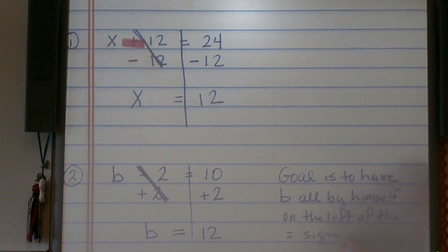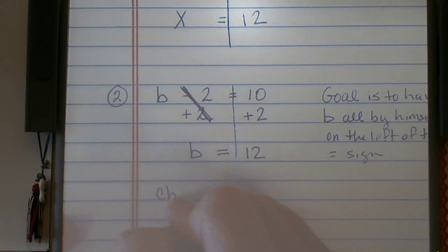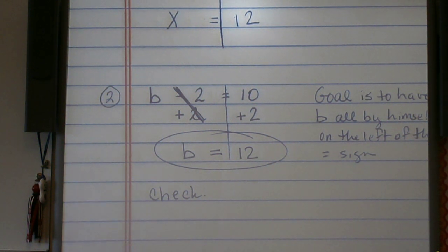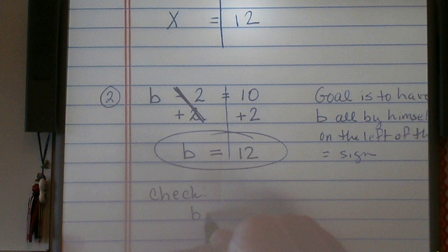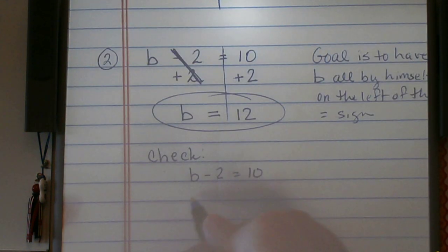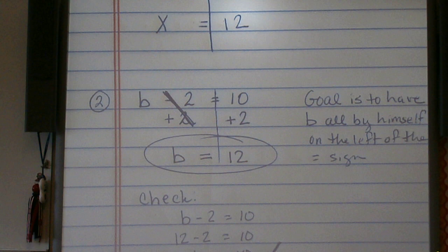Now, what you always want to do is go back and check your work to make sure that you've done the math correctly. And the way we check our work is we take our answer for our variable and simply plug it back into the original equation. So B minus 2 equals 10. I said that B was 12. So I'll come in and put 12 minus 2 equals 10. 12 minus 2 is 10. That, in fact, equals 10. So this is correct, and B equals 12 is our answer.